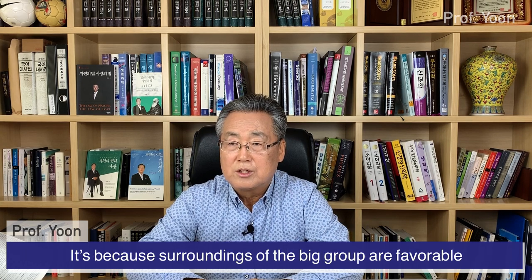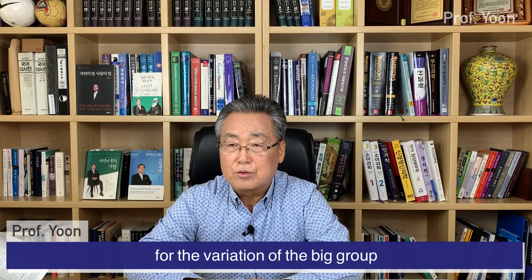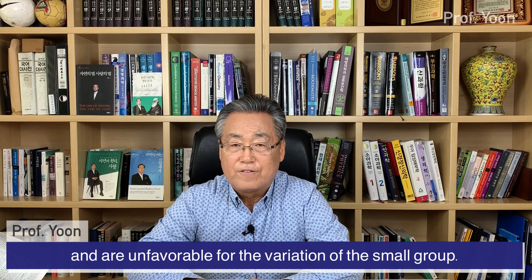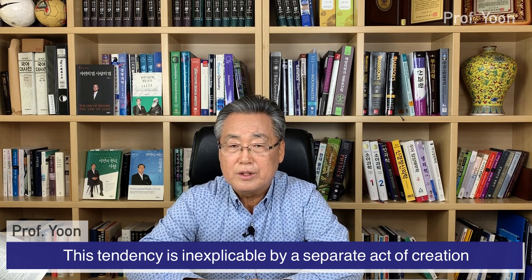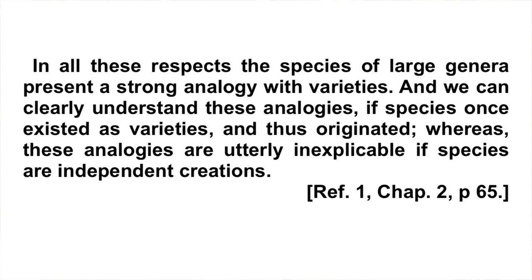It is because the surroundings of the big group are favorable for the variation of the big group and are unfavorable for the variation of the small group. So this tendency is inexplicable by a separate act of creation, which has no concept of probability. In all these respects, the species of large genera present a strong analogy with varieties, and we can clearly understand these analogies if species once existed as varieties, and thus originated.